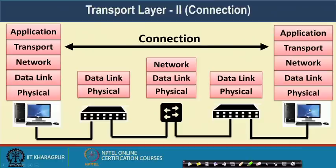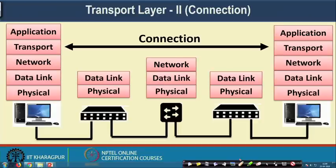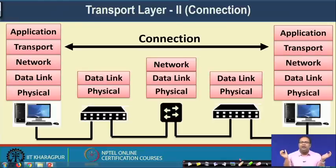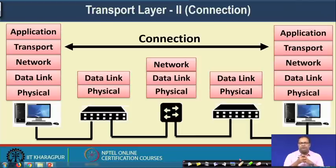The first service we are going to talk about is connection establishment. The two end devices, which have the entire 5 layers of the protocol stack, first need to set up a logical connection between themselves — just like one person saying hello and another replying back. They establish a logical link and become sure that they want to share further information. Connection establishment checks whether the other end is alive and ready to receive the message, and if it acknowledges, we can safely start sending data.